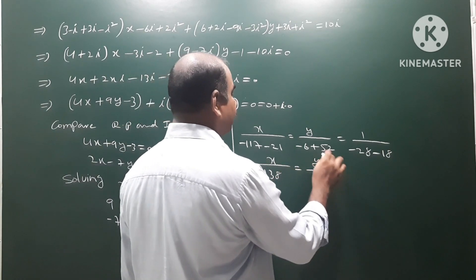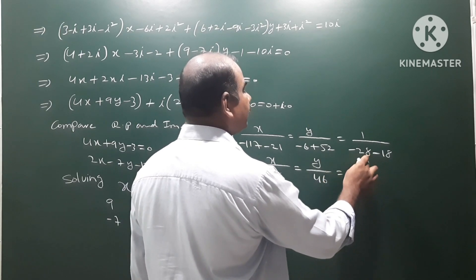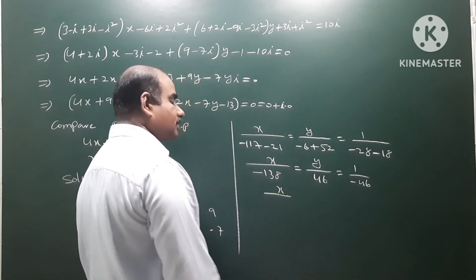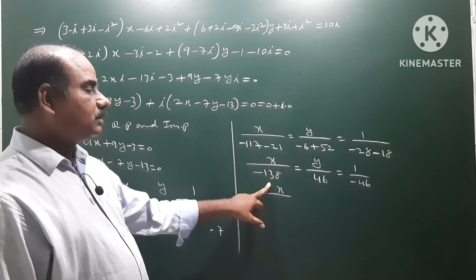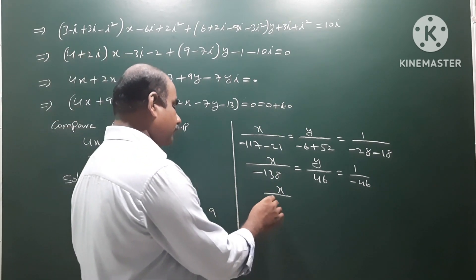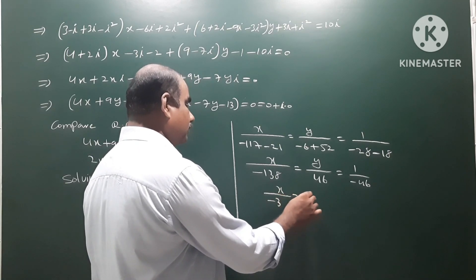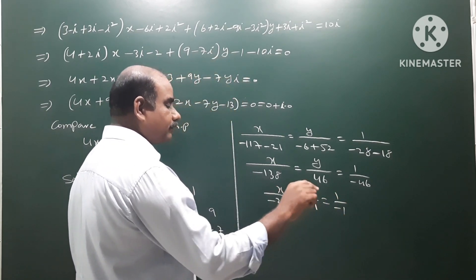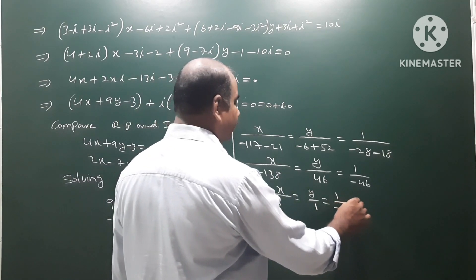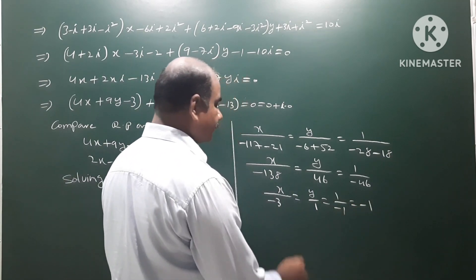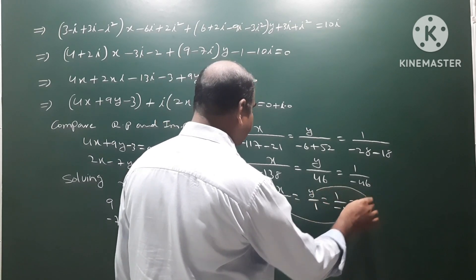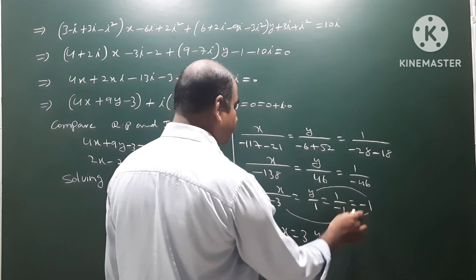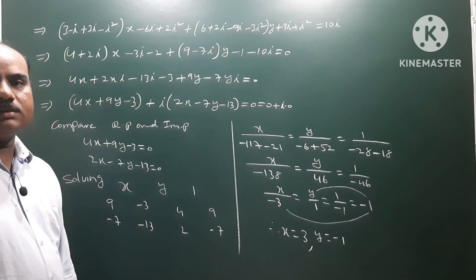y / ((-3)×2 - (-13)×4) = y / (-6 + 52) = y / 46. And 1 / (4×(-7) - 2×9) = 1 / (-28 - 18) = 1 / (-46). So x / (-138) = y / 46 = 1 / (-46). Cancelling: x = (-138)/(-46) = 3, y = 46/(-46) = -1. Therefore x = 3 and y = -1.